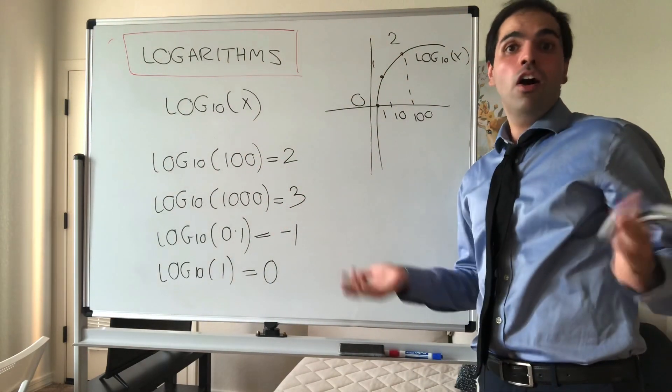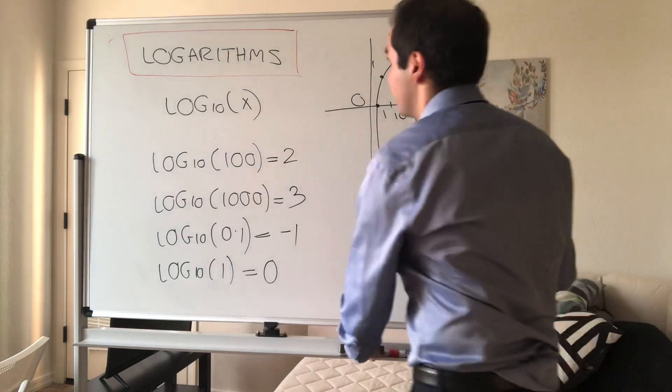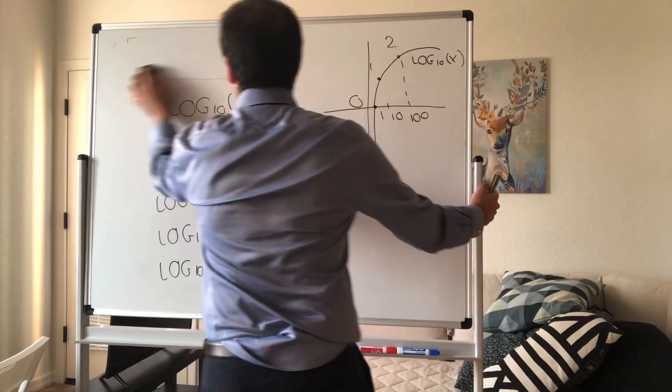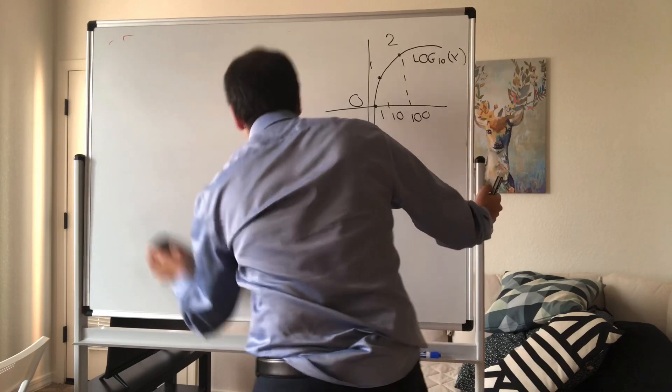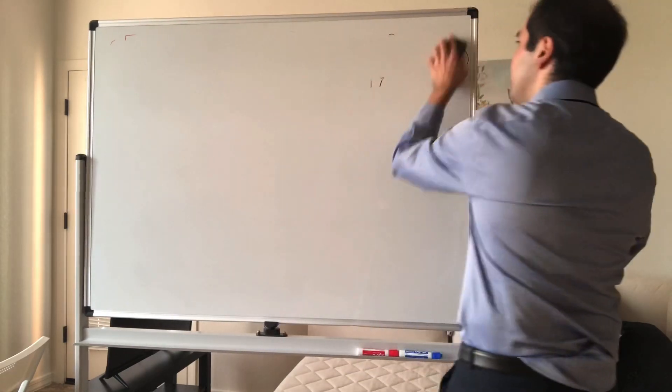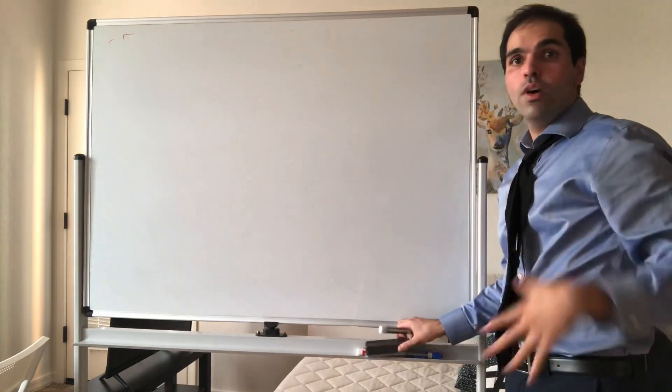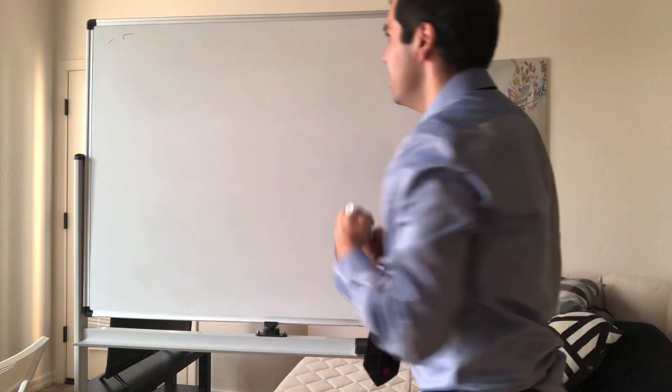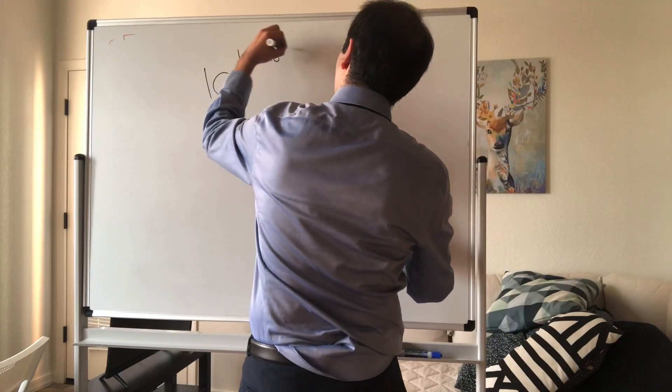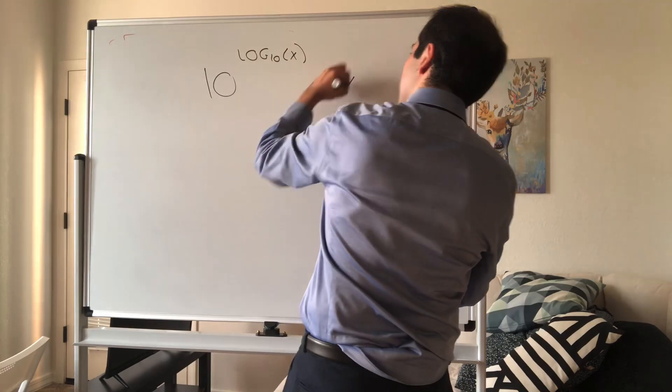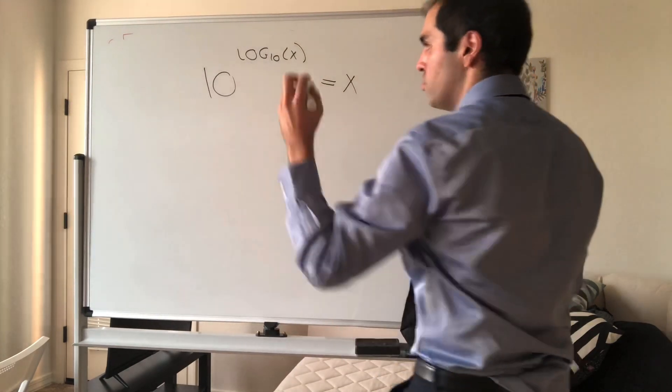Second of all, log has some very nice laws. Basically, log undoes whatever 10 to the something does. So 10 to the log base 10 of x, it turns out it's just x.